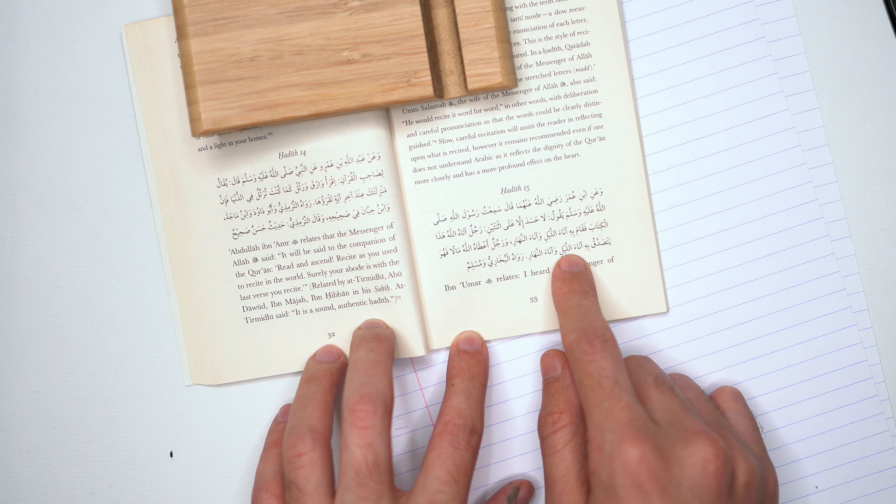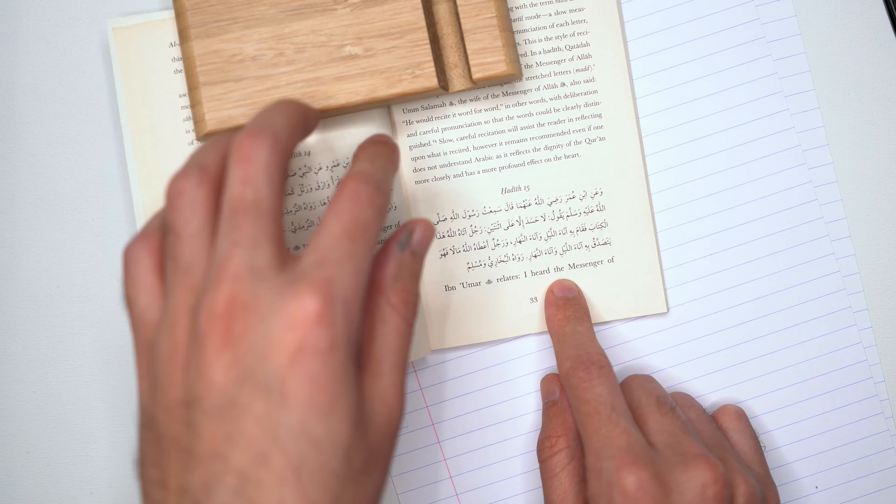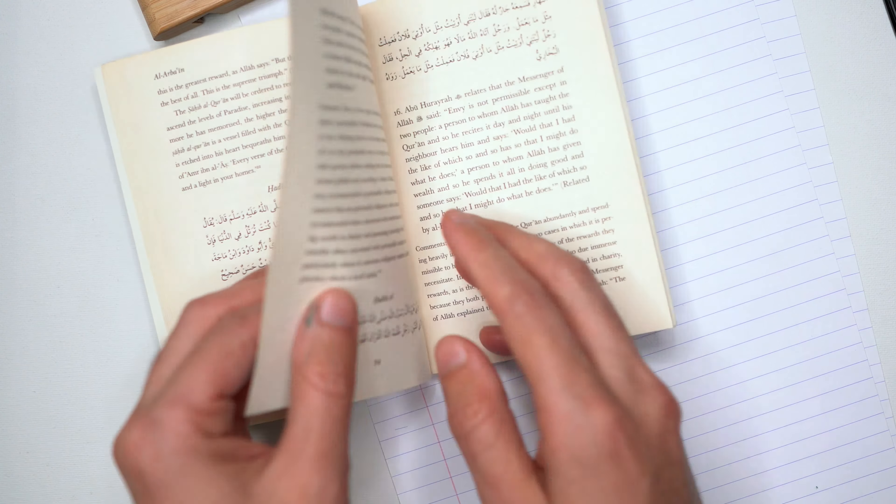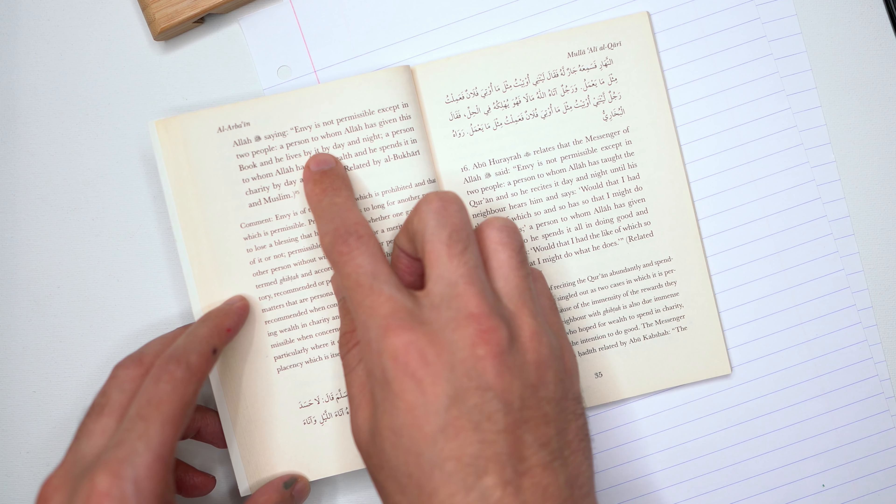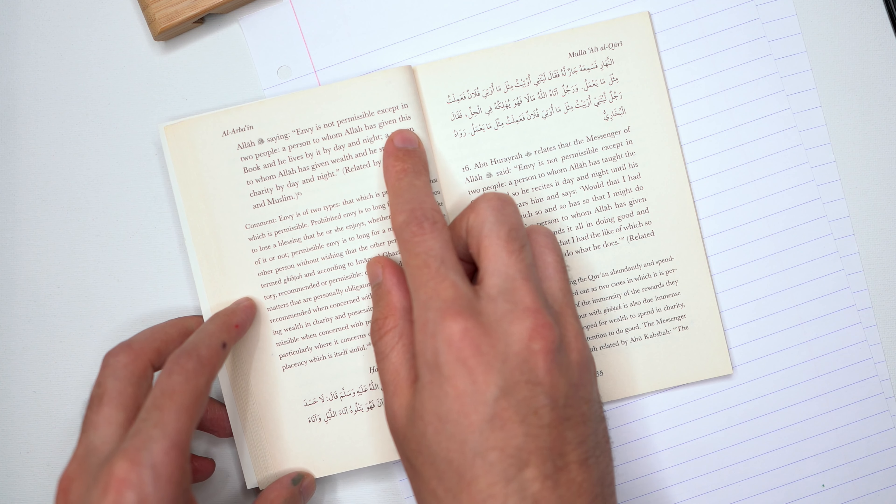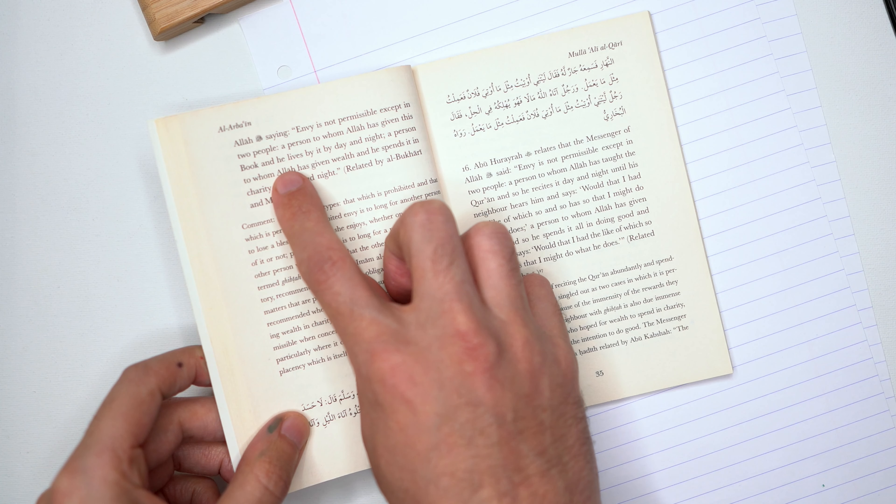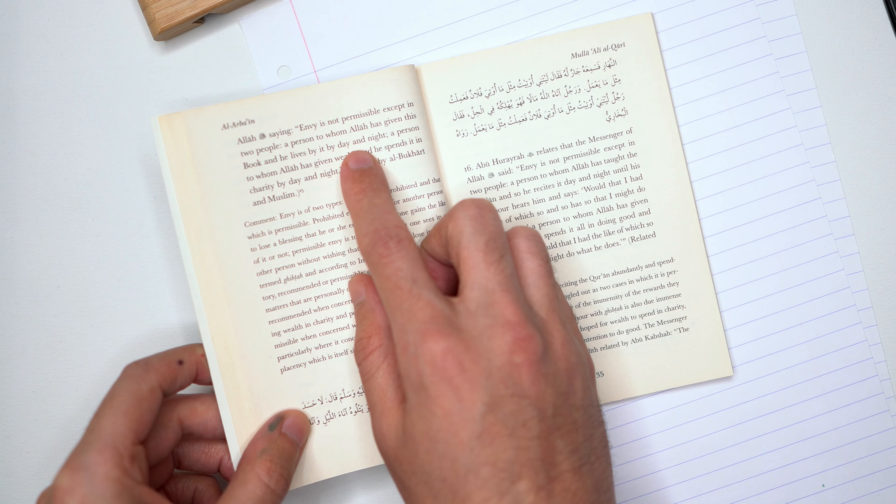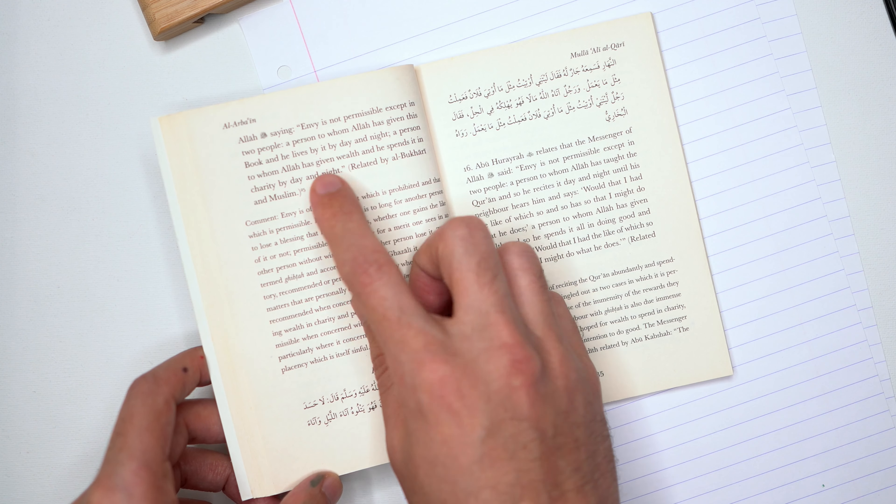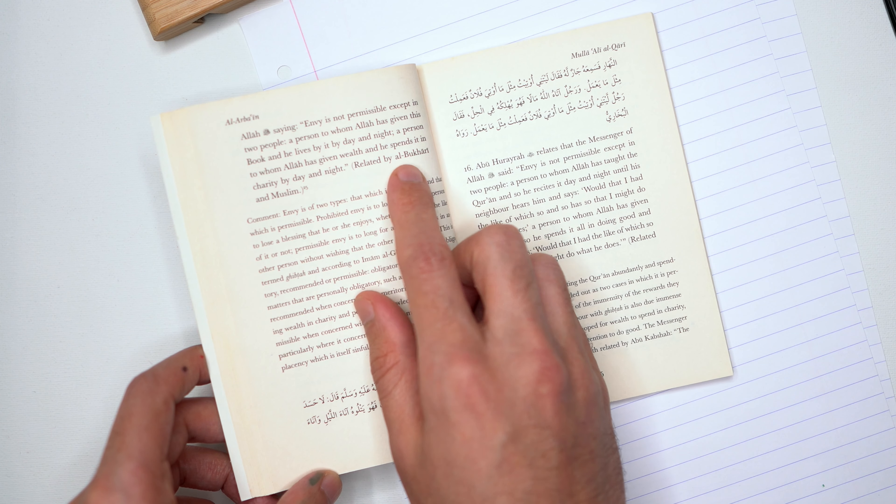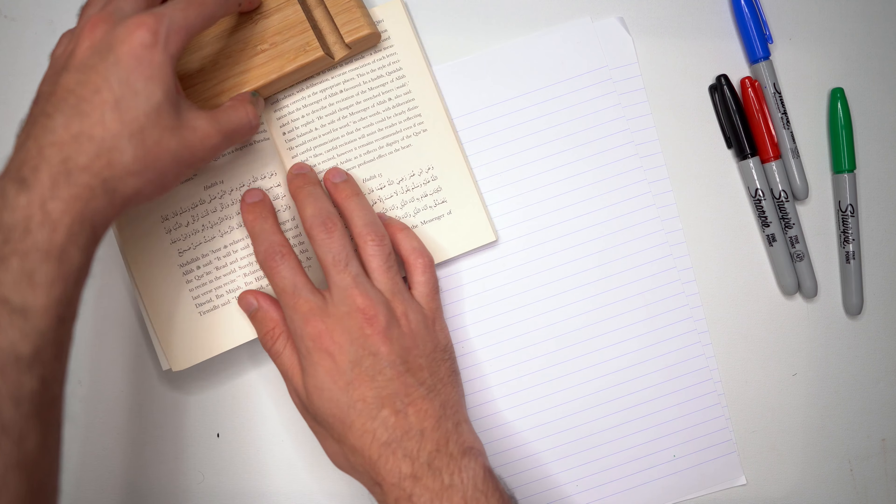Rawah al-Bukhari wa Muslim. Ibn Umar radiyallahu anhu relates: I heard the messenger of Allah sallallahu alayhi wa sallam saying, envy is not permissible except in two people. A person to whom Allah has given His book and he lives by it by day and night, and a person to whom Allah has given wealth and he spends it in charity by day and night. Related by al-Bukhari and Muslim. So this is the hadith.